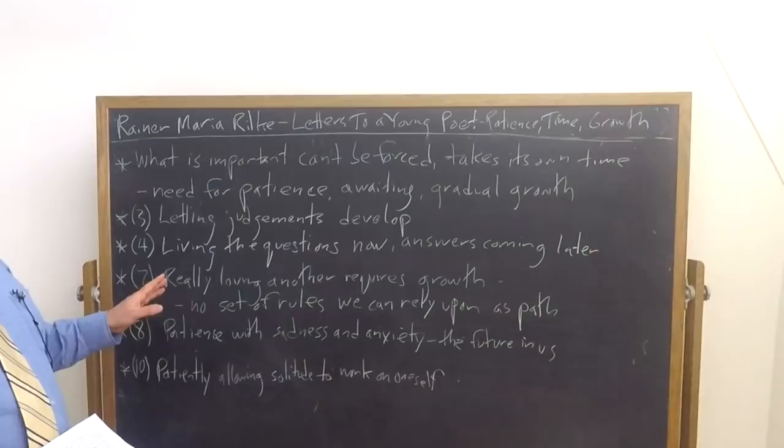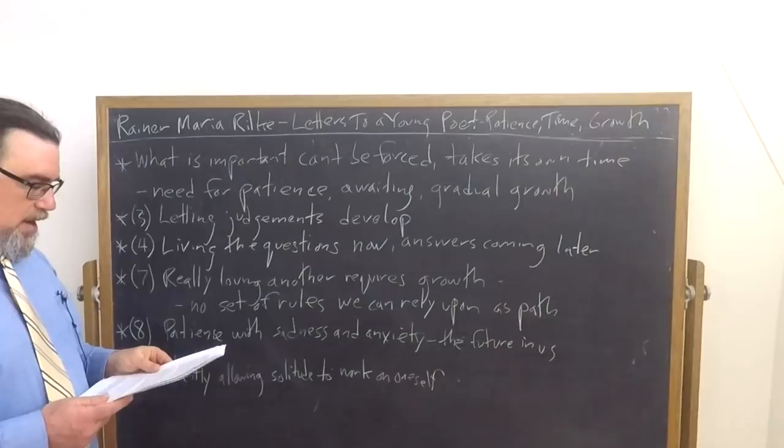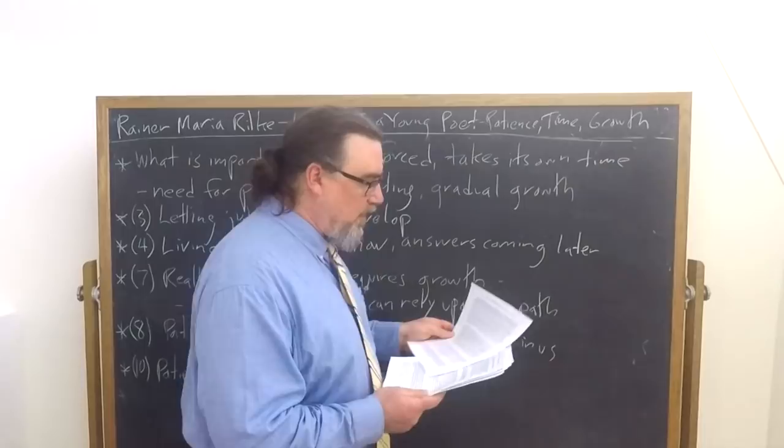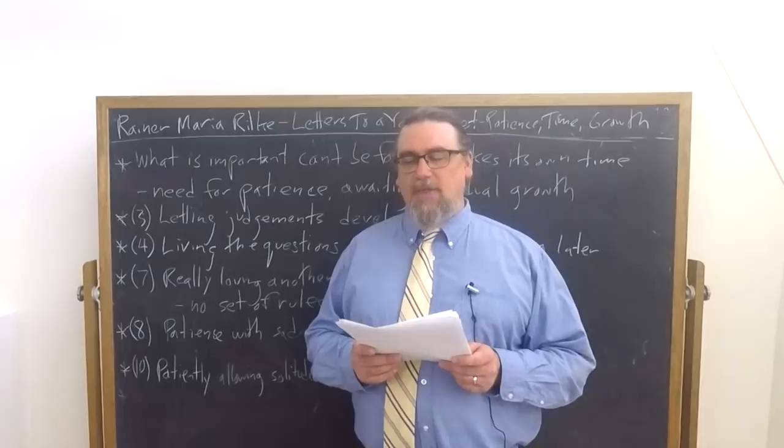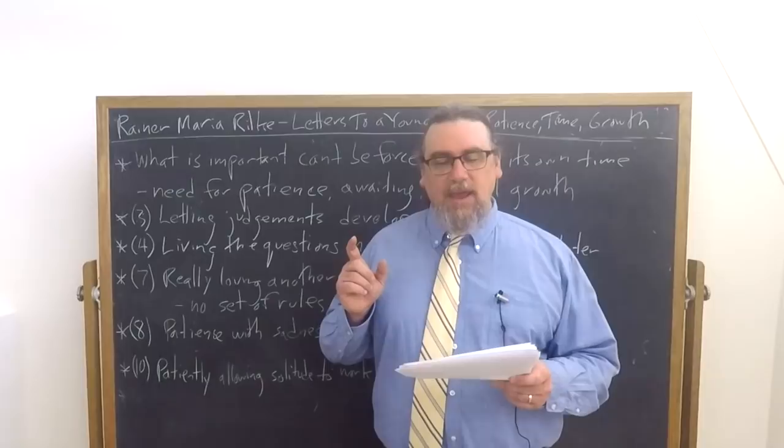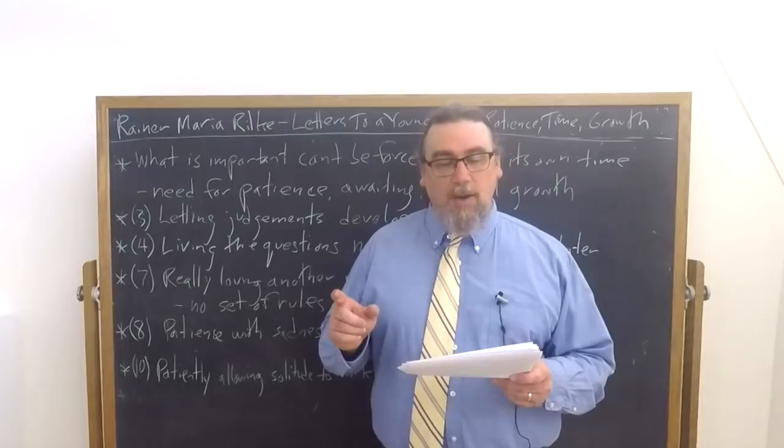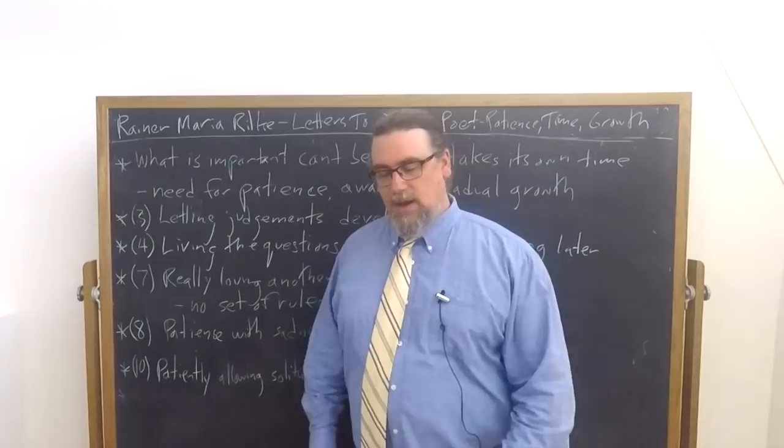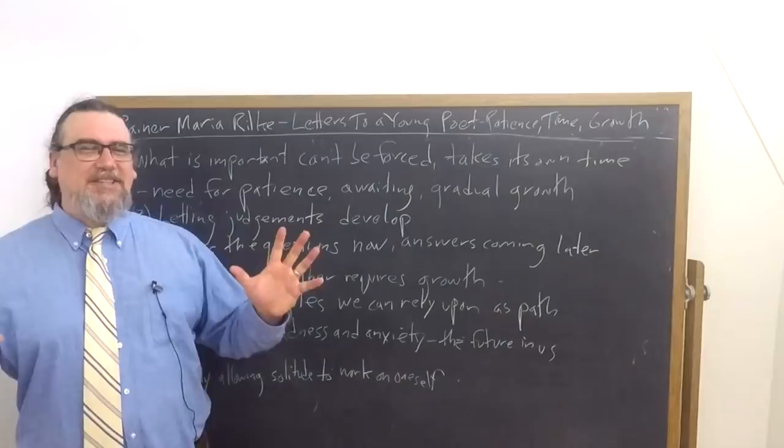When it comes to love, he talks about this in letter seven, and he has a lot of interesting things to say. One of the things that he tells us is that he says, whoever looks seriously will find that neither for death, which is difficult, nor for difficult love, has any clarification, any solution, any hint of a path been perceived. And for both of these tasks, which we carry wrapped up and hand on without opening, there is no general agreed upon rule that can be discovered. Does that mean that we're totally at a loss? Nobody knows anything about love or death or birth or any of the existentials, as we might call them. No, it means that we actually have a world in which people are constantly giving us all sorts of answers.